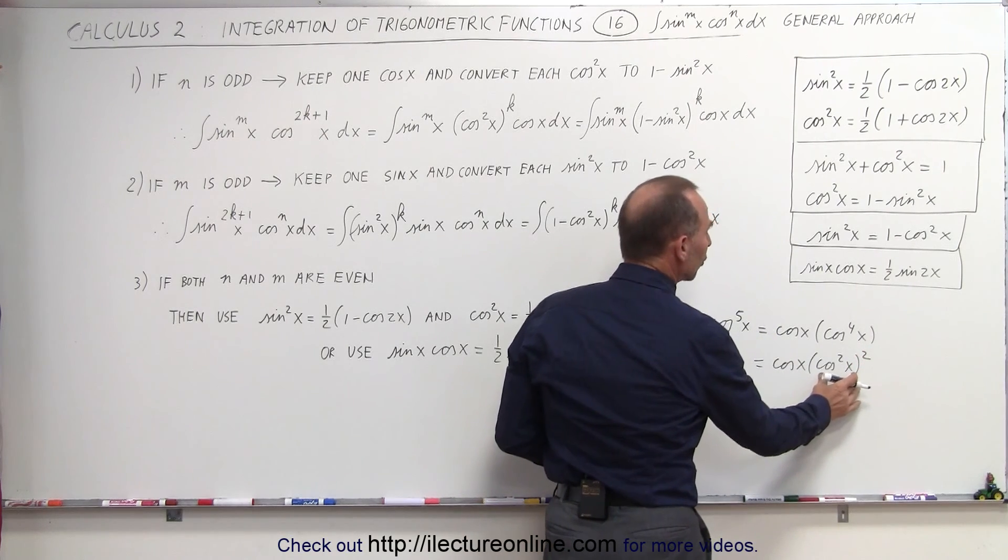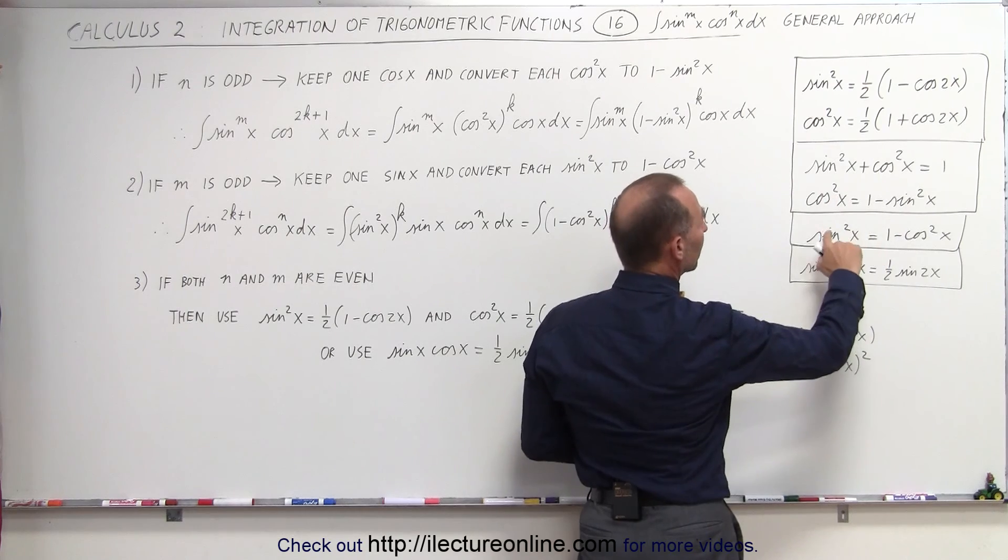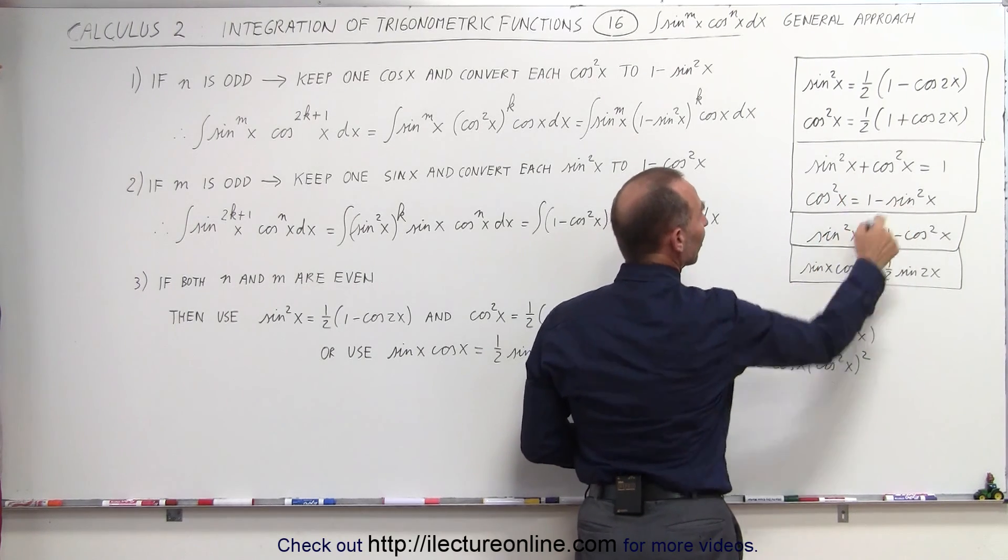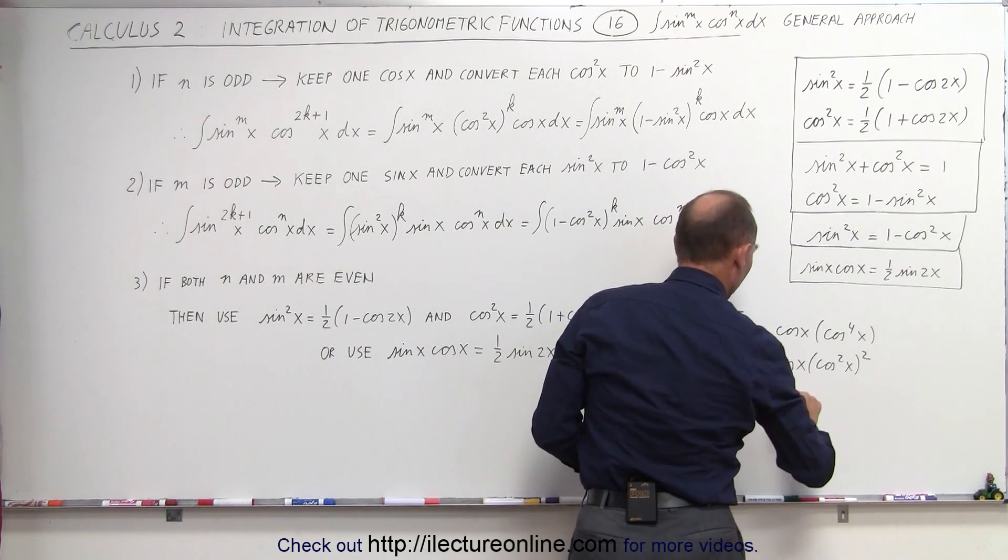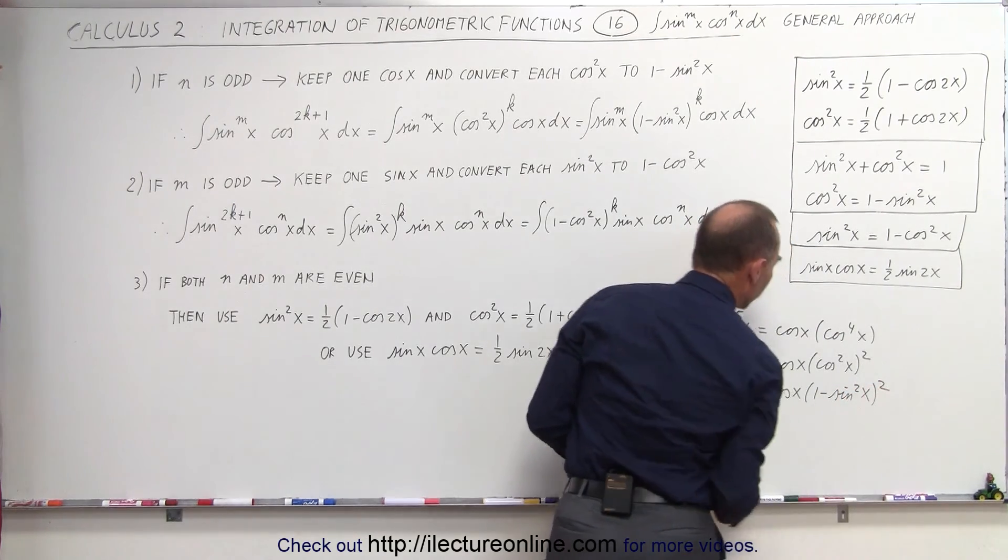And then you take each of the cosines squared of x and write it as 1 minus the sine squared of x. So this becomes cos x times (1 - sin²x), quantity squared.